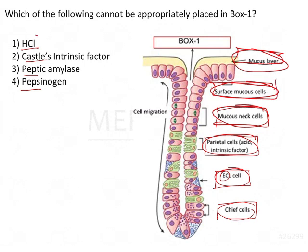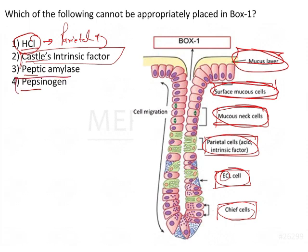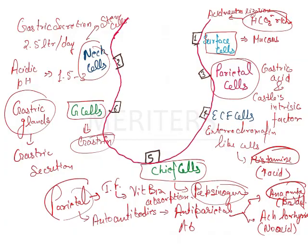HCl is secreted by the parietal cells. Castle's intrinsic factor, important for absorption of B12, is also secreted by parietal cells. Pepsinogen is secreted by the chief cells. Therefore, peptic amylase is the one not secreted here — it cannot be placed in box 1. The answer is option 3.